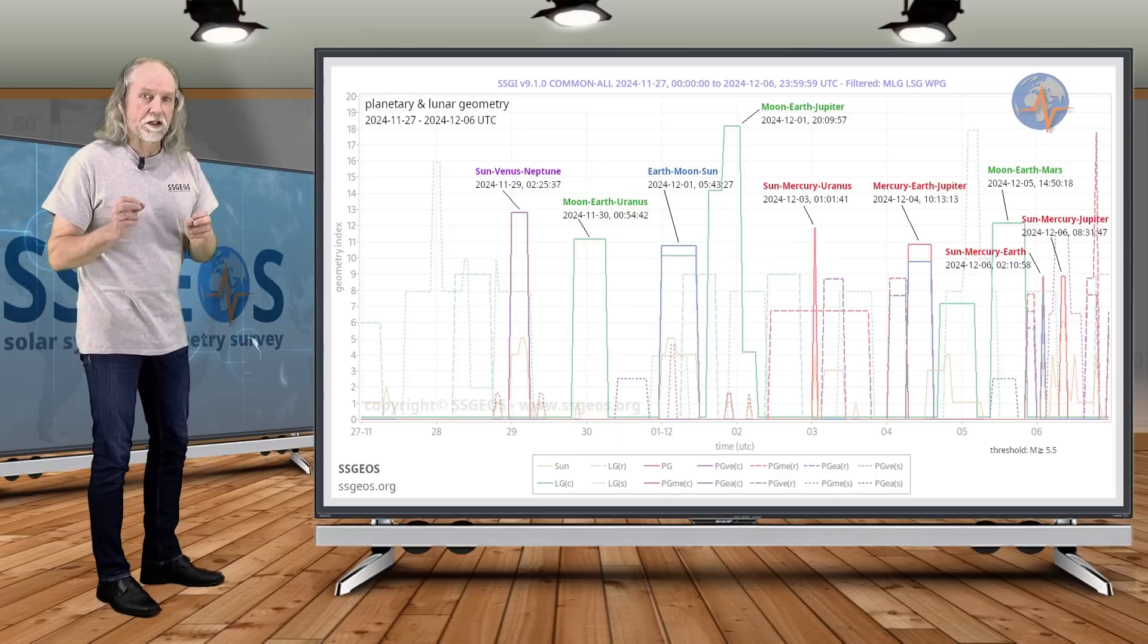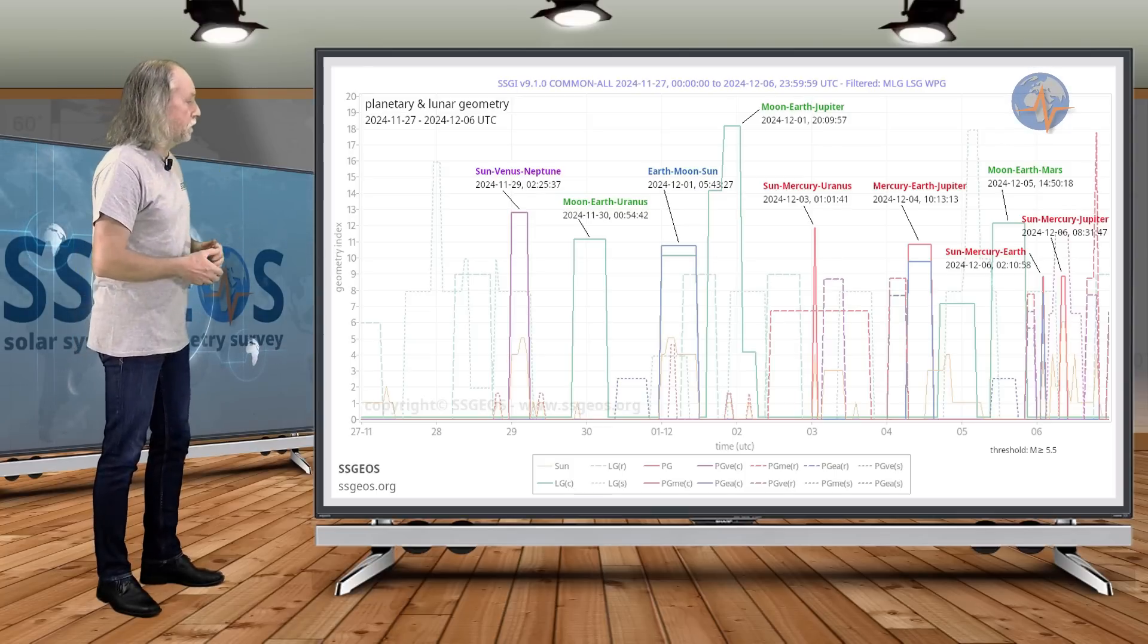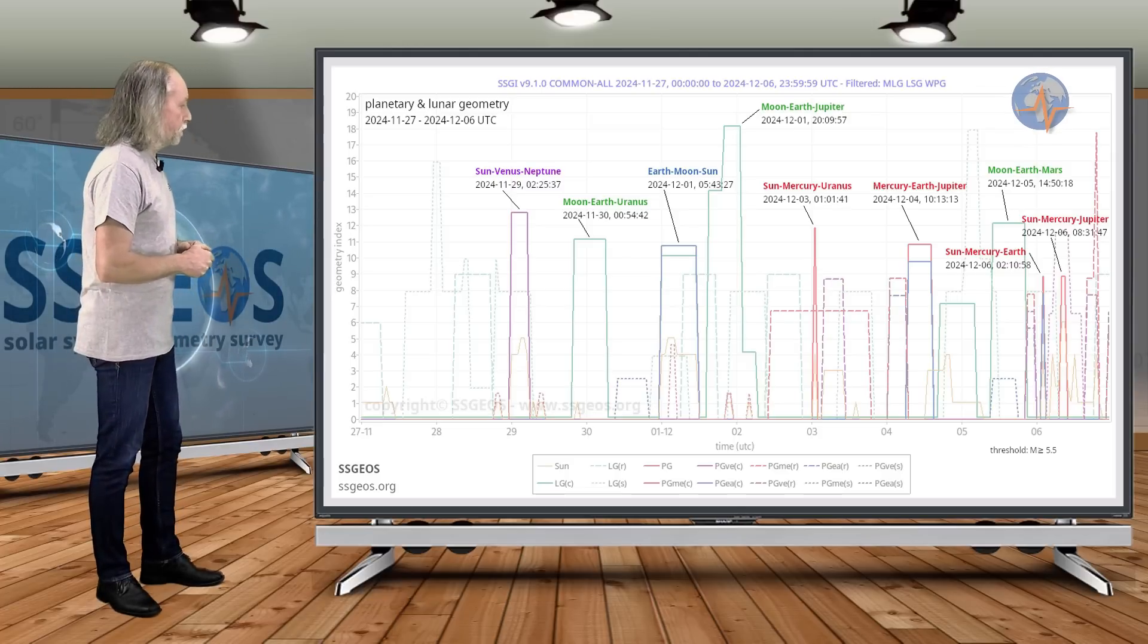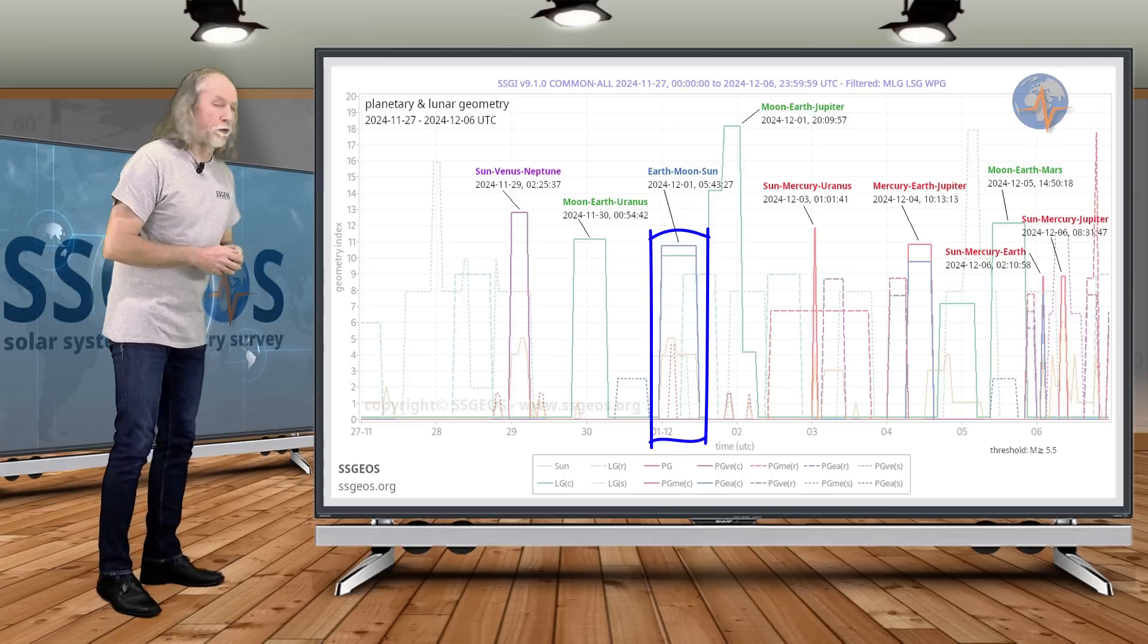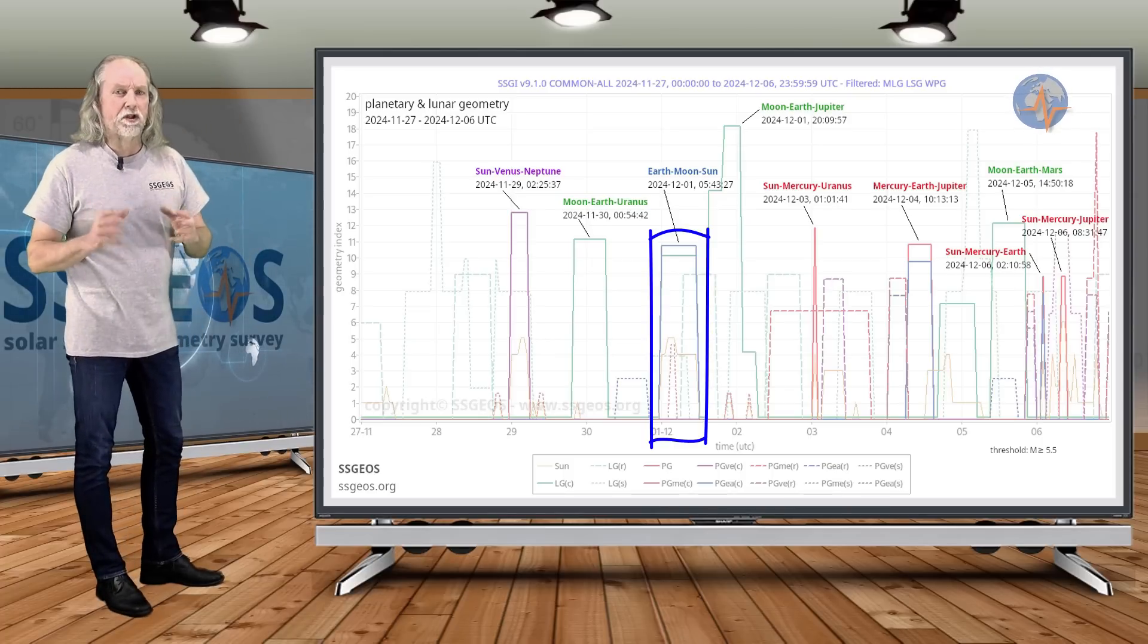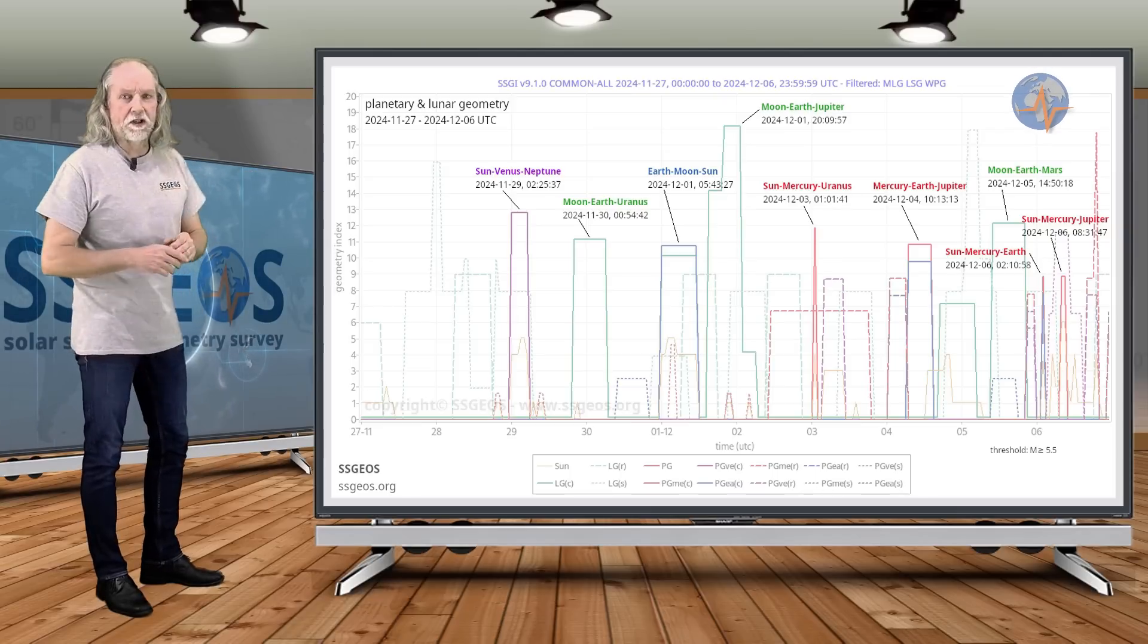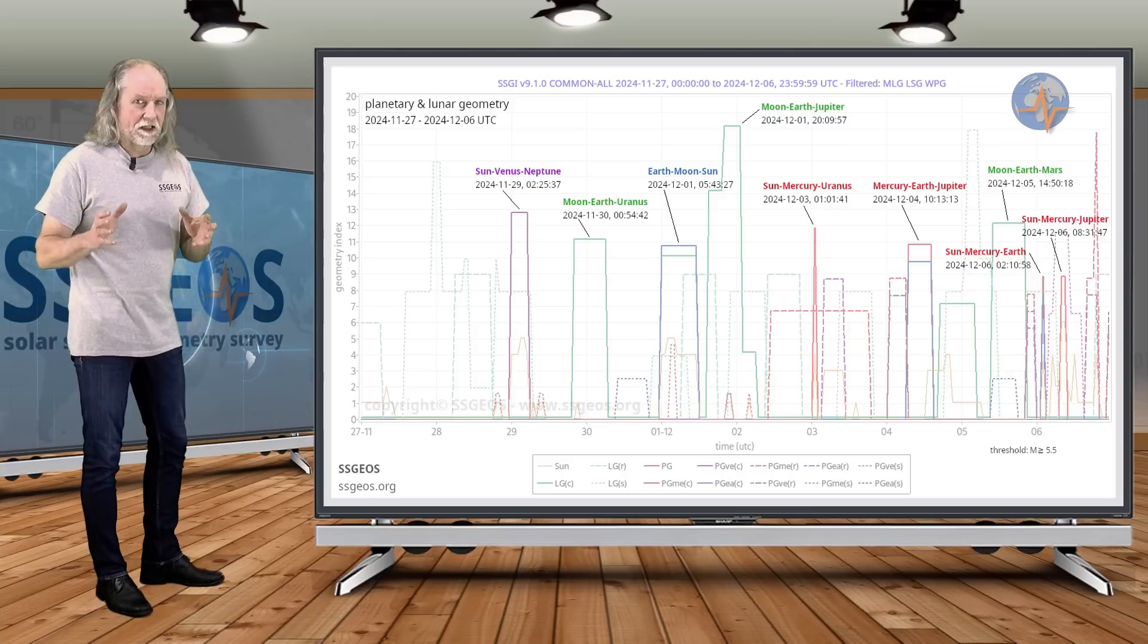Sometimes when Venus aligns with outer planets we can have a larger earthquake and we count about two, two and a half days from the moment of that planetary conjunction and then we would end up around the new moon on the 1st of December. There is a slight possibility of a larger earthquake but Sun, Venus, Neptune, there is on its own. Mercury is not involved so I say a slight possibility.